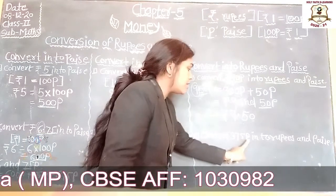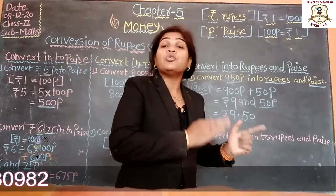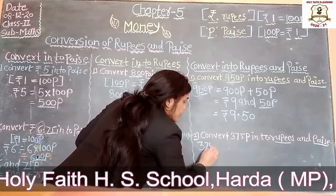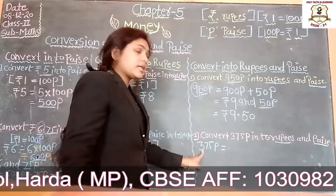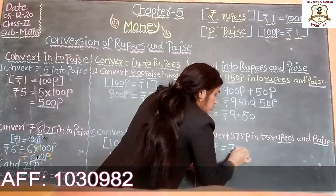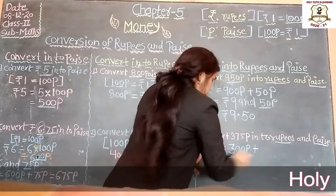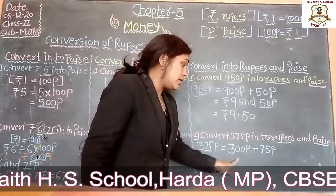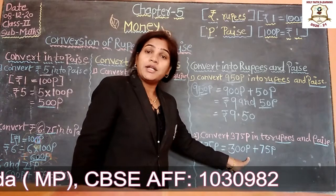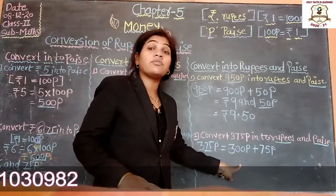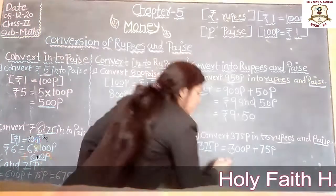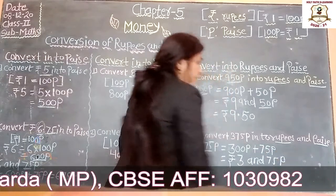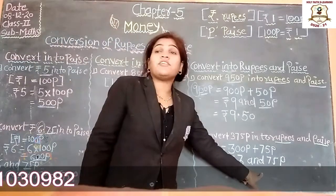Now one more example: convert 375 paise into rupees and paise. So 375 paise equals 300 paise plus 75 paise. 300 paise is equal to rupees 3, because 100 paise equals 1 rupee. So the answer is rupees 3 and 75 paise.